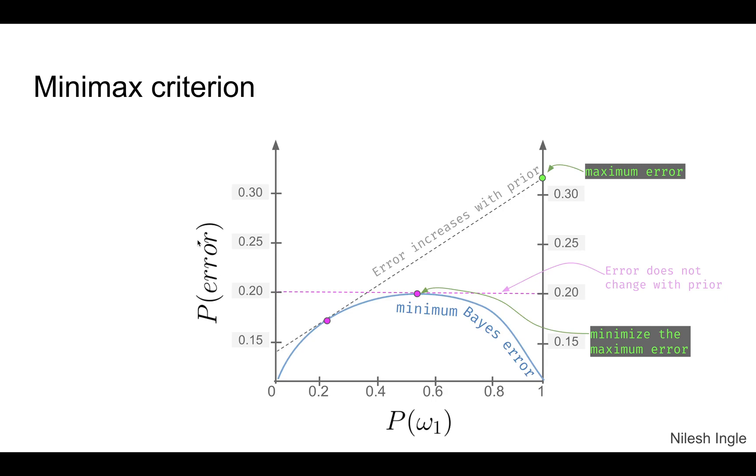Now on this plot what we have is the prior probability on the x-axis and the probability of error on the y-axis, and this blue curve that we see is the minimum Bayes error as a function of prior probability.